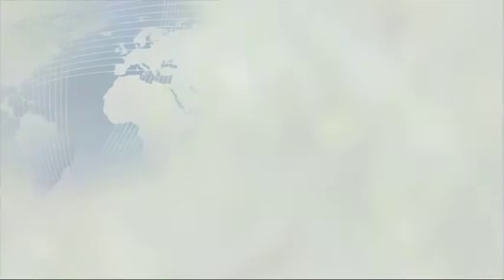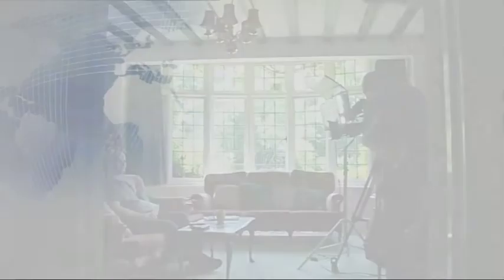Framing and composition. We have two eyes and see things three-dimensionally, but the camera sees everything two-dimensionally, which means pictures frequently lack depth. If you shoot things straight on, the picture can look flat. But if you shoot at a diagonal, you can play with perspective and create angles, which creates a sense of depth. Here is how not to shoot: the camera is straight in front of the subject, who's sitting on a sofa right in front of a wall. The image is quite obviously lacking in depth — it's flat.